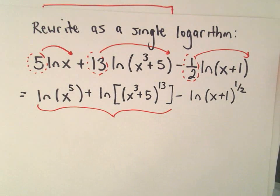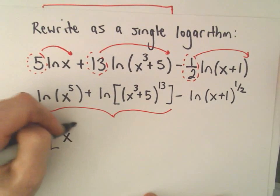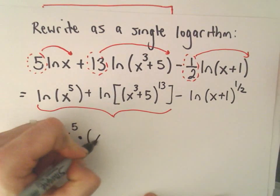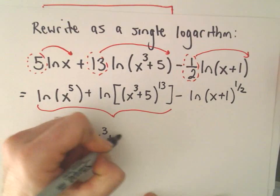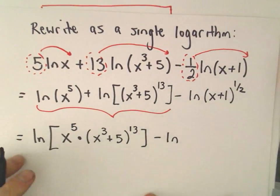So the first one here, it says if you have addition between logarithms, it says we can write that as multiplication. So we'll have x to the 5th times the other stuff, which is x cubed plus 5 raised to the 13th power, minus the natural logarithm.